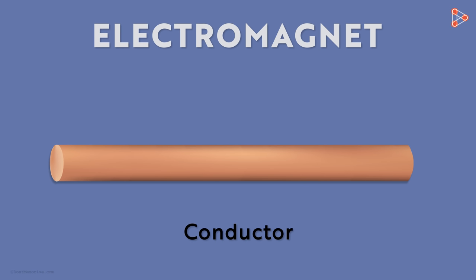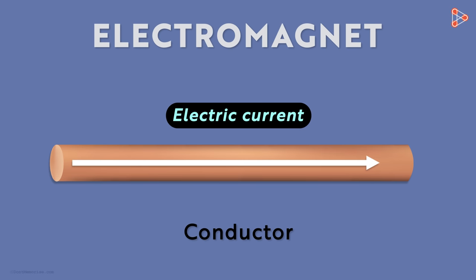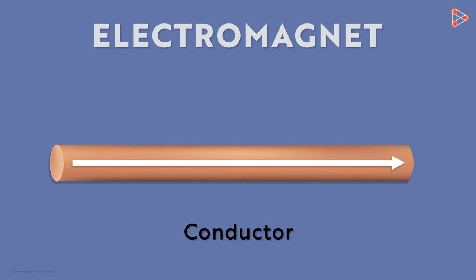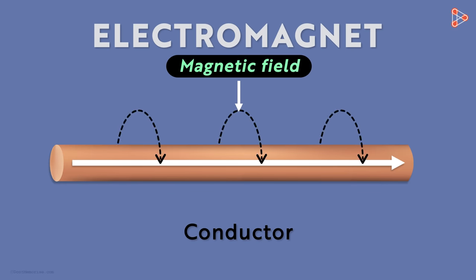In the last video, we saw what an electromagnet is. Any conductor such as a straight wire through which electric current is flowing is an electromagnet. That's because there is a magnetic field around it.